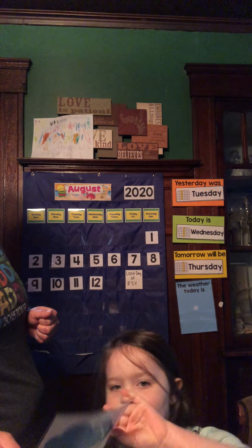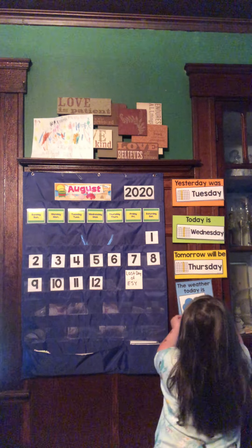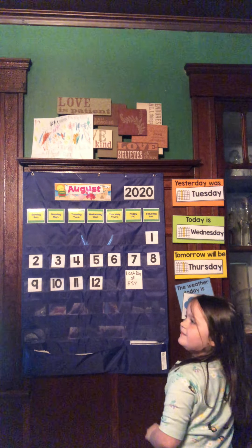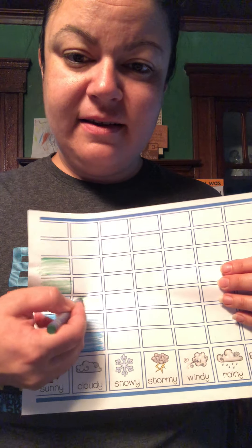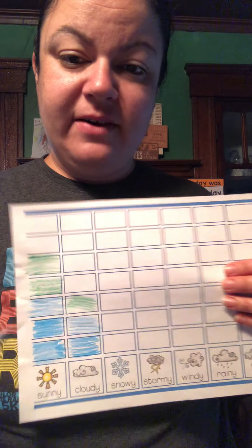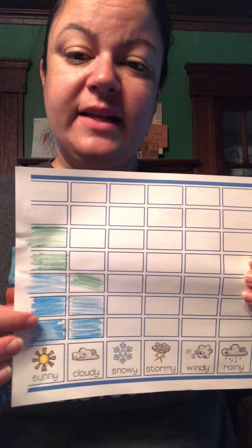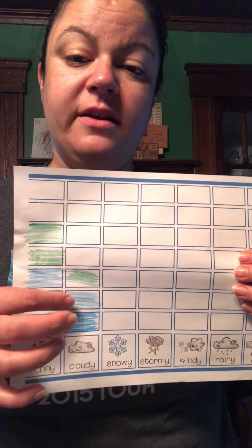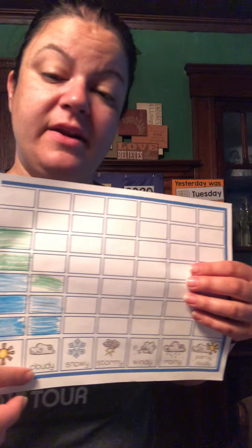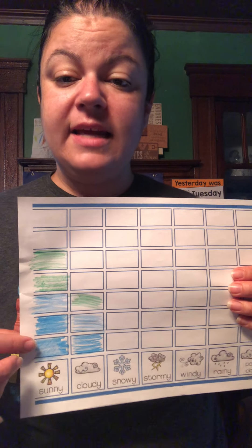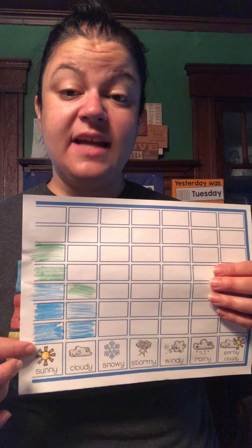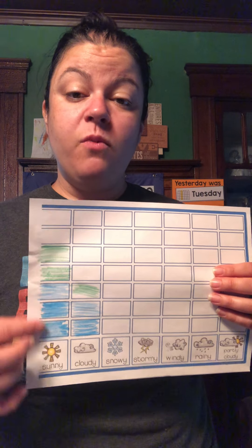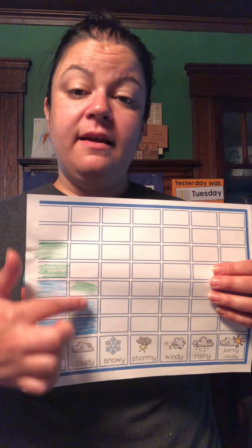Yeah, maybe the sun will come out a little later. Alright, let's take a look at our calendar graph — we're going to add a cloudy. We added cloudy. Let's count the cloudy days: one, two, three. We have three cloudy days. And sunny days: one, two, three, four, five. We have five sunny days. So we have more sunny days than cloudy days.